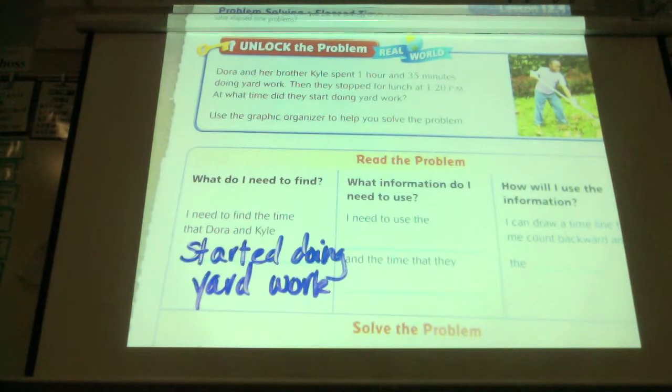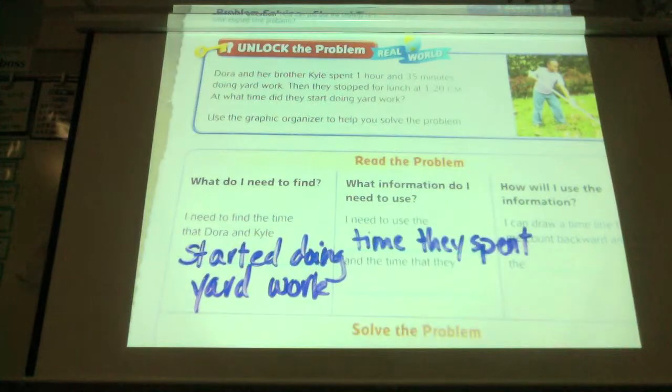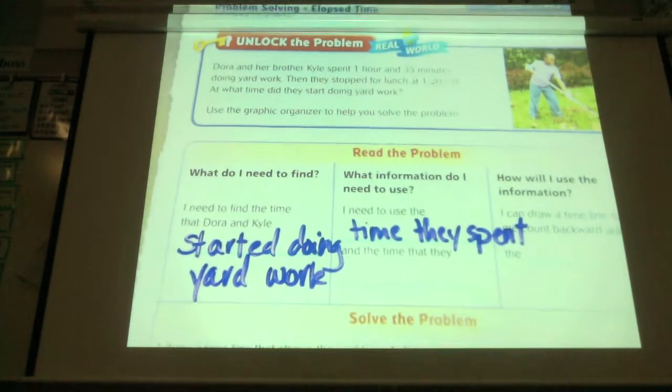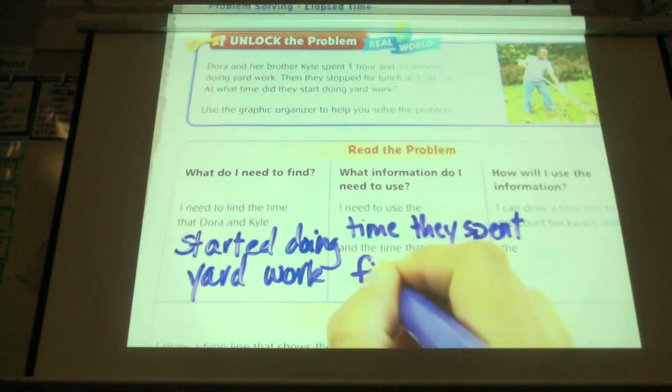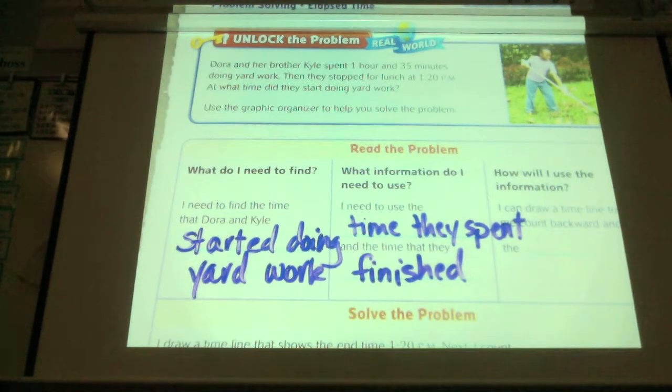We need to find the time that Dora and Kyle started doing yard work. What information do I need to use? I need to use the time they spent and the time that they finished. And how will I use this information? I can draw a timeline to help me count backwards and find the time they started.